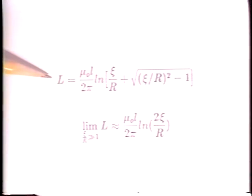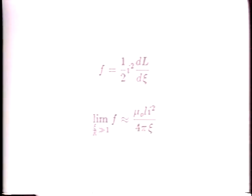We can equivalently determine the net force per unit length acting on the cylindrical conductor by using conservation of energy. The vertical position of the conductor is xi. The inductance for a cylindrical wire of length L is a function of the vertical displacement xi. R is the conductor radius. When the conductor radius is very small compared to the vertical displacement xi, the inductance formula simplifies. Conservation of energy tells us that the force on the wire is one half I squared times the derivative of the inductance with respect to xi. When xi is much greater than R, the force is identical to that derived using the Lorentz force.